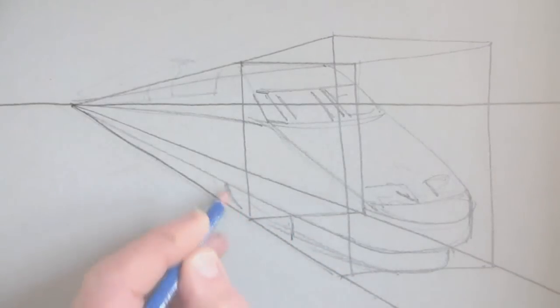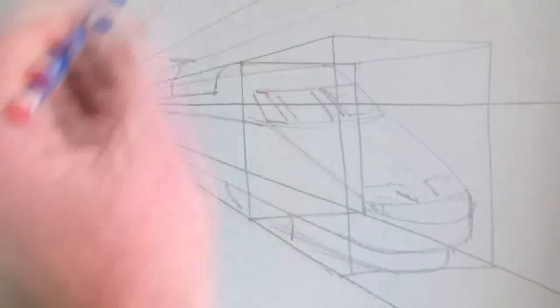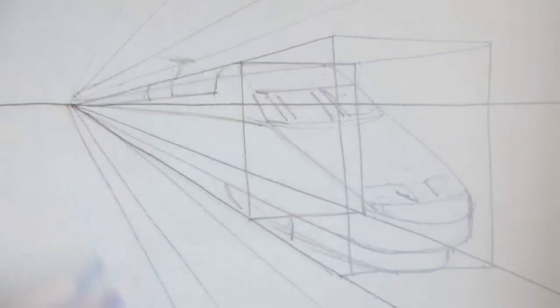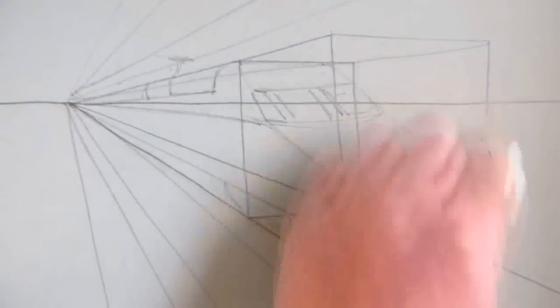This is an electric train, so I draw the power lines in the sky and also add more rail lines to the ground. Next, I erase some of the cuboid as I no longer need it.